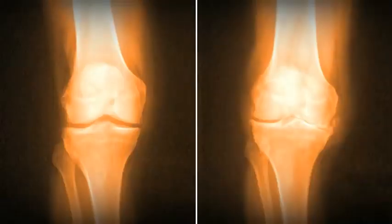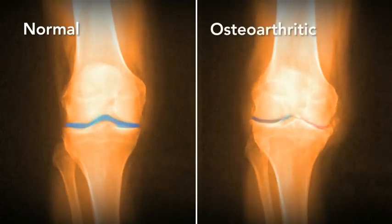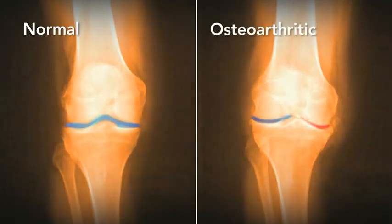These x-rays show the joint space in a normal knee, compared to the narrow space in an osteoarthritic knee.